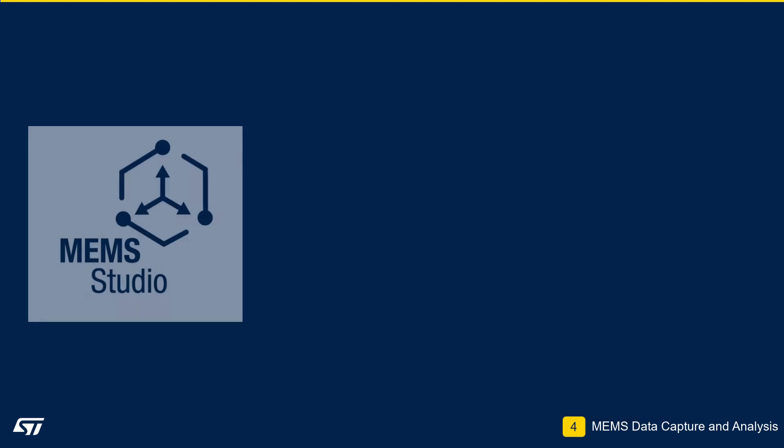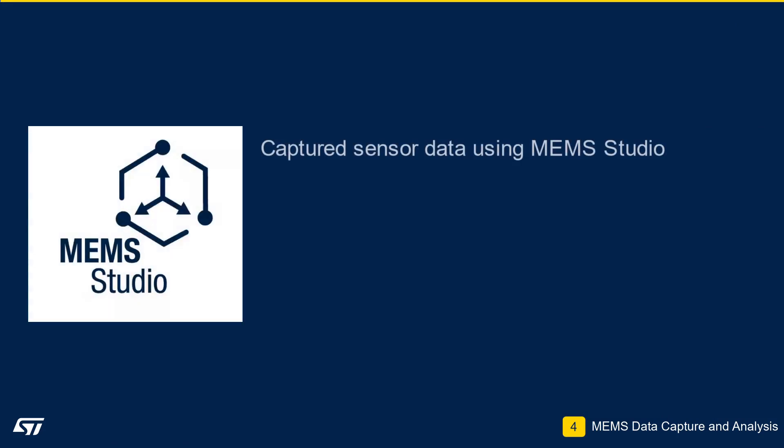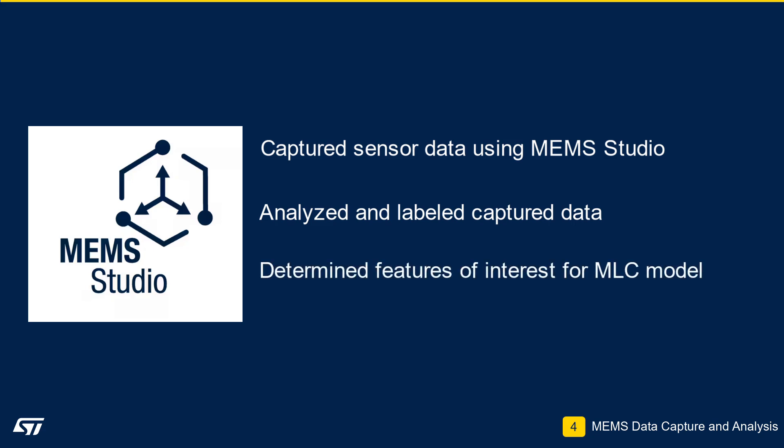In this module, we used the MEMS Studio Save to File functionality to save accelerometer data to your PC. Then we used the data analysis tools to view the time domain, frequency domain, and spectrogram of the captured data, and labeled our data into different states. Finally, we examined the data in order to determine a feature of interest that we could use to generate a machine learning model. This concludes Module 4.